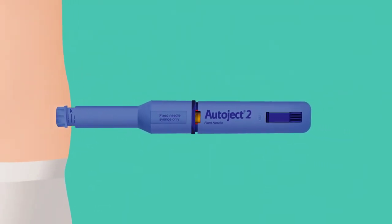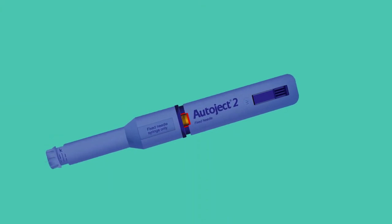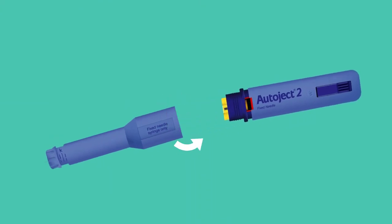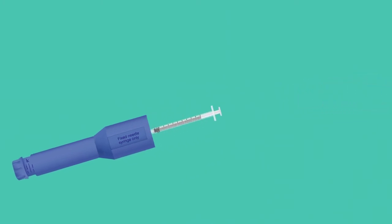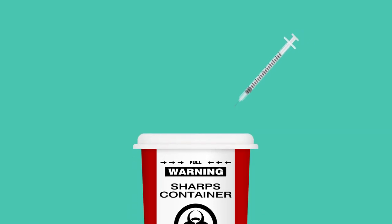Lift the Autoject straight out from the injection site once the injection is complete. Be careful as the needle will be exposed until it is removed from the device. Carefully unscrew the syringe housing and remove the used syringe from the Autoject 2. Always ensure the full dose has been delivered from the syringe. Safely dispose of the syringe and needle in a suitable sharps container.